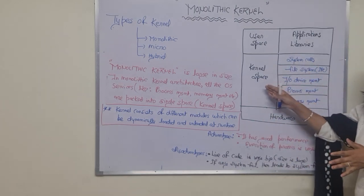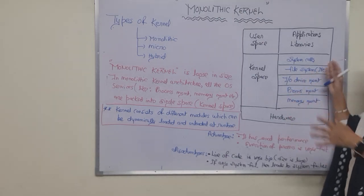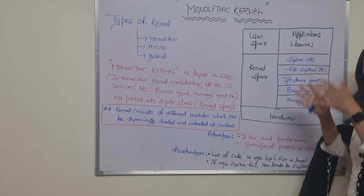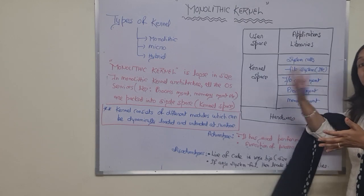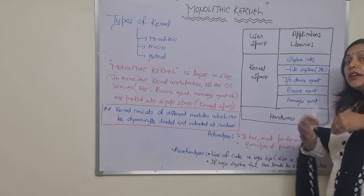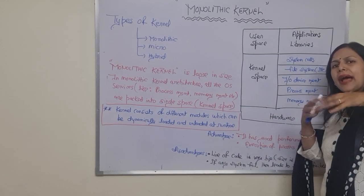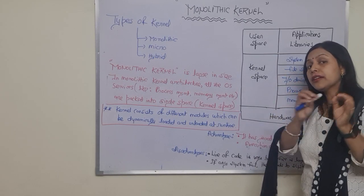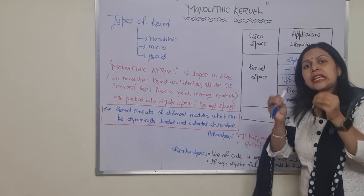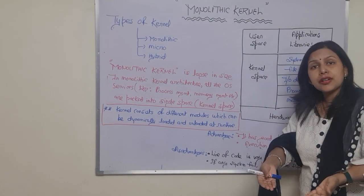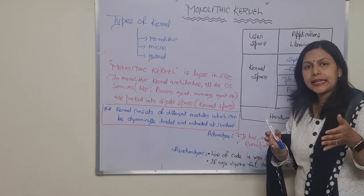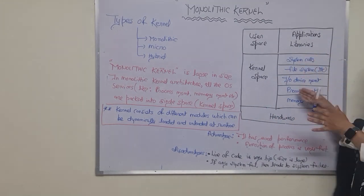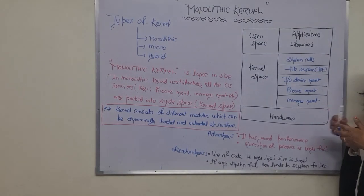In the kernel space, all the main functions — system calls, file management, memory management, storage management — are running. The kernel is the backbone of the operating system. The shell passes commands to the kernel based on what the user wants to do, and the kernel performs those functions as per user demand.